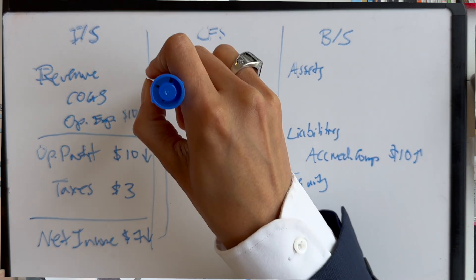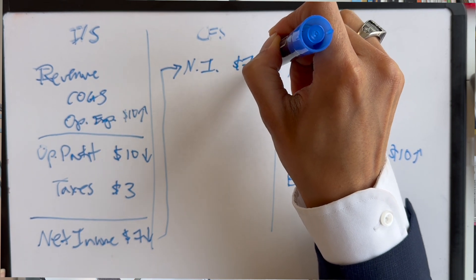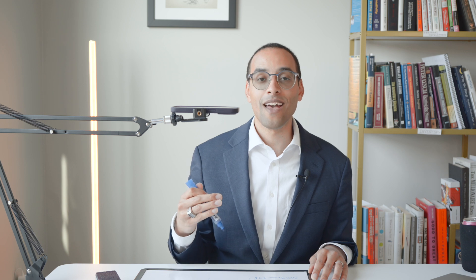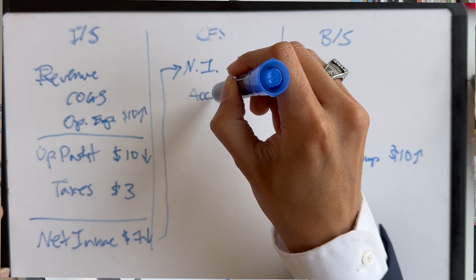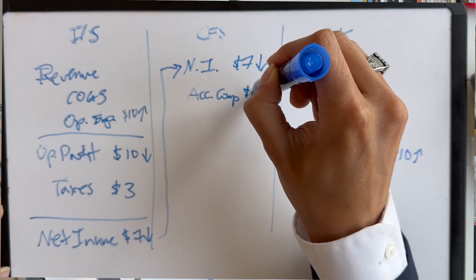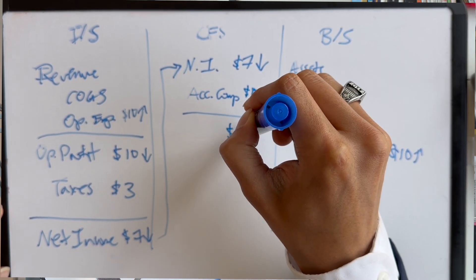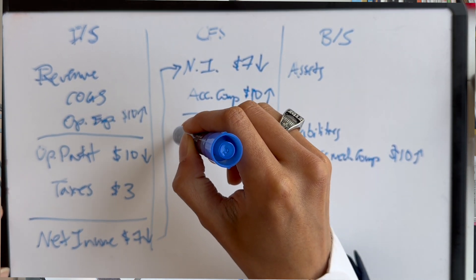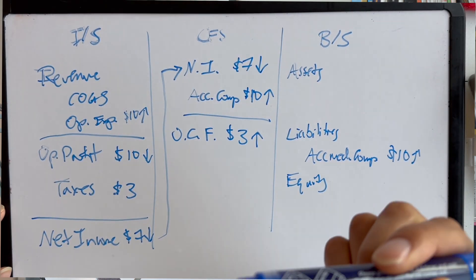Remember, our net income flows up to the top of the cash flow statement. So, net income is down by $7. But, this is a non-cash expense. Remember that the company hasn't actually paid out cash for it yet. So, we have to add back this non-cash charge. So, if we add back the accrued comp of $10, that's going to give us a change in cash of positive $3. So, this is operating cash flow. Goes up by $3 as a result.